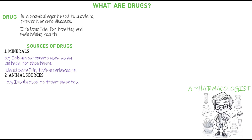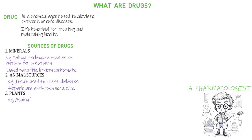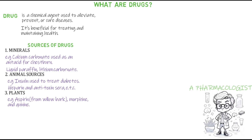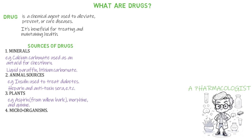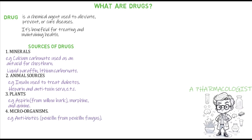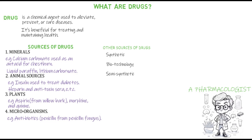Other drugs obtained from animals include heparin and antitoxin sera. Drugs are also obtained from plants; for example, aspirin is gotten from willow bark, and we also have morphine and quinine, which come from different plants. Microorganisms are also vital sources of drugs — antibiotics are generally obtained from microorganisms, for example penicillin, which is obtained from the Penicillium fungus. Other sources of drugs include synthetic, biotechnology, and semi-synthetic processes.